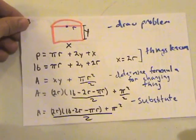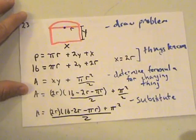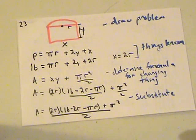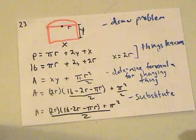Problem 23. So this problem is asking us about a normal window. We're constructing a semi-circle on top of an ordinary rectangular, and we have to find the dimensions to maximize the area with a total perimeter of 16.